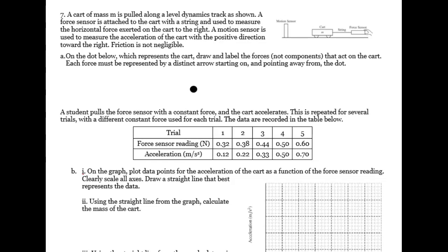A motion sensor is used to measure the acceleration of the cart with the positive direction toward the right. Friction is not negligible, so that means that you have friction. So the velocity is going in that direction.